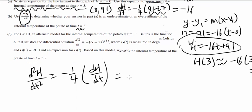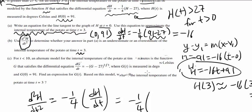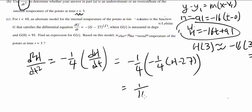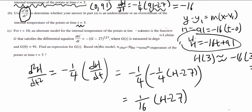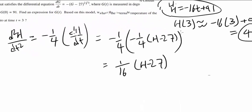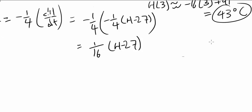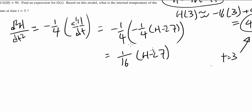So we can leave it like this. And you can plug in dh/dt which we know as negative one fourth times h minus 27. That gets us 1 over 16 times h minus 27. So how can we use this to determine whether our estimate of 43 degrees Celsius at time of 3 is underestimate or overestimate? Here's the thing.